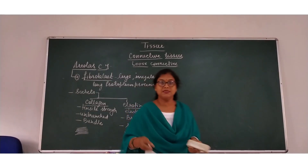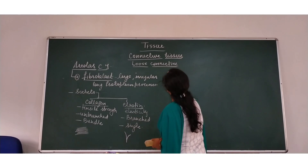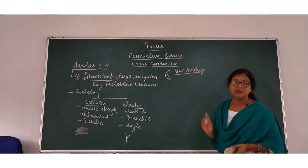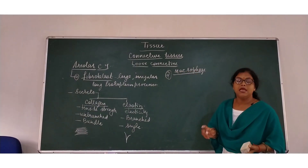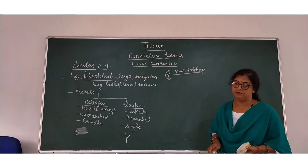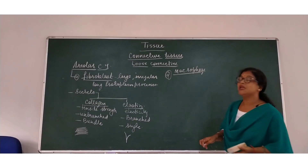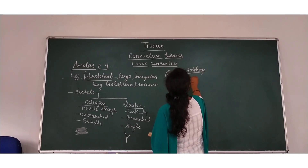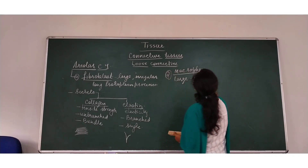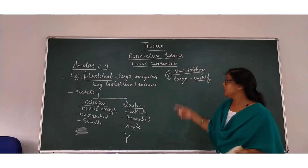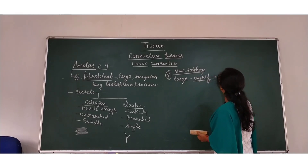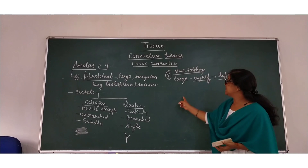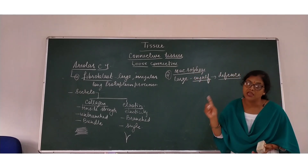The second kind of cell is macrophages. These are large phagocytic cells — phagocytic means they go through the process of phagocytosis. They engulf foreign particles and germs. So we can say they provide a defense mechanism in our body. These are macrophages, the second kind of cells of areolar tissue.